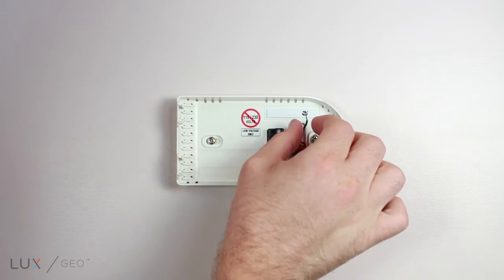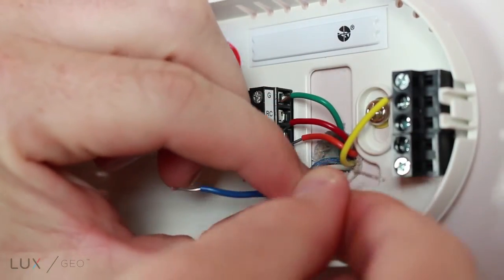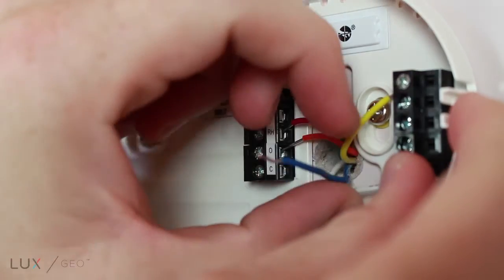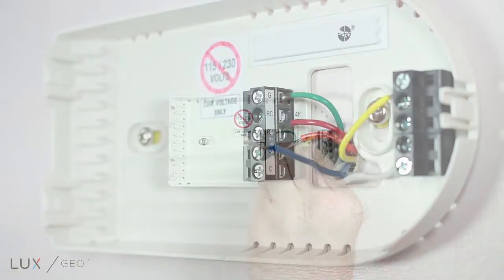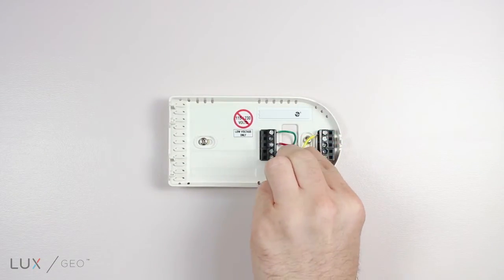The blower fan is green and will be connected to the G terminal. Auxiliary heat is white and will be connected to the W2 terminal. The 24 volt common is blue and will be connected to the C terminal.